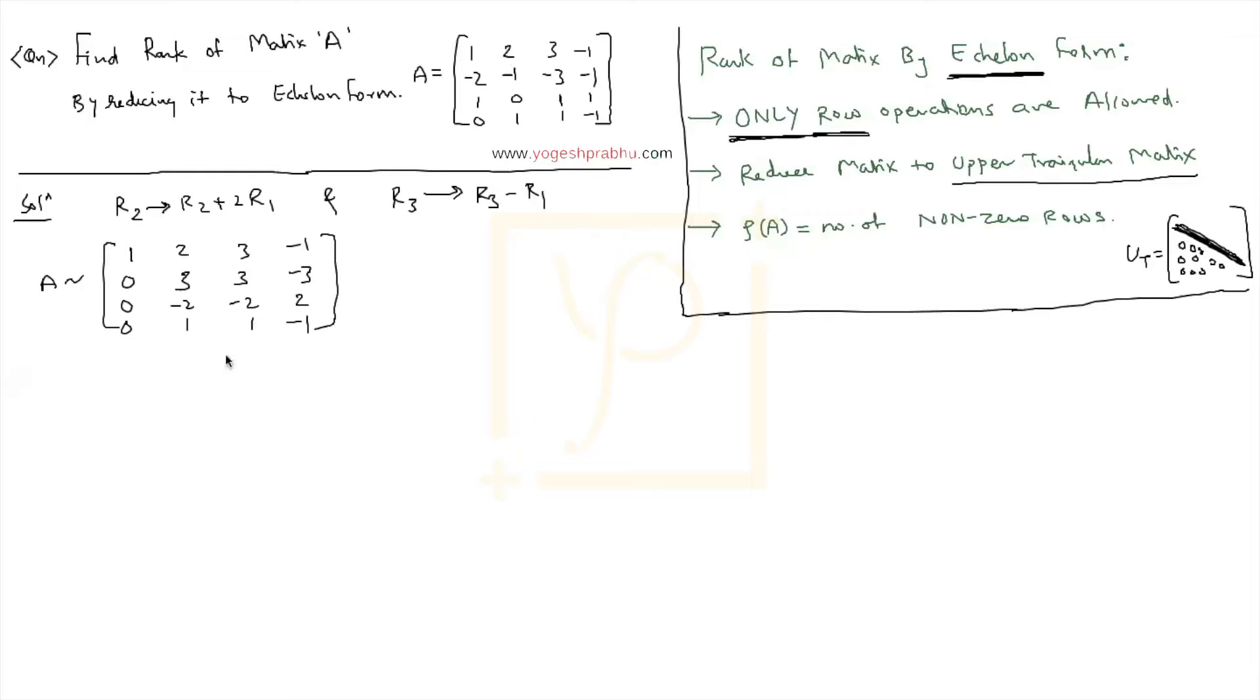Well, once we complete that, next we are only allowed to do row operations anyways. So now what next row operations you can do. You can actually use R4. Do you see R4 is nice? It is having 0, 1, 1, minus 1.